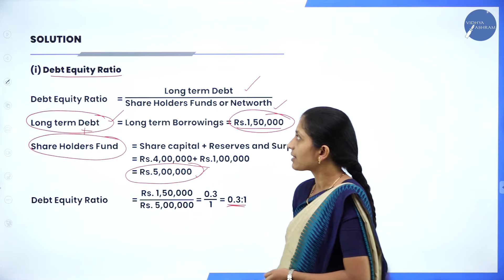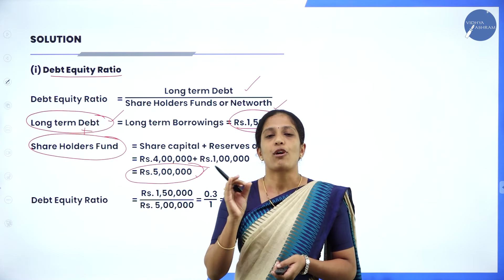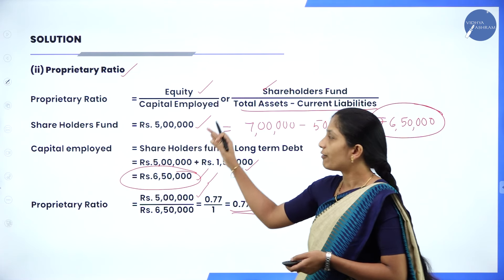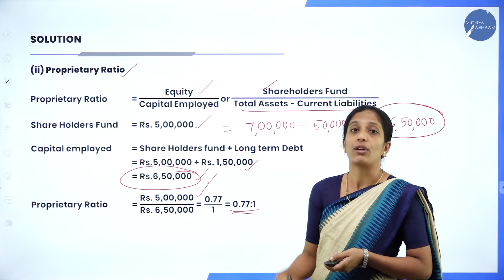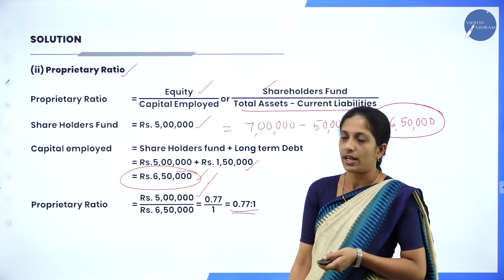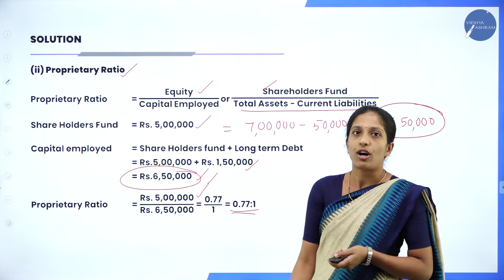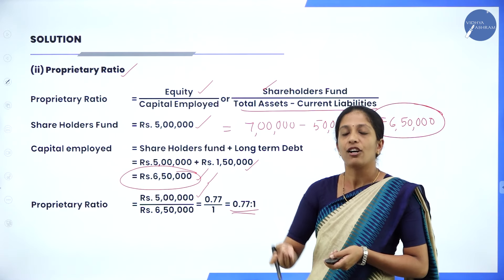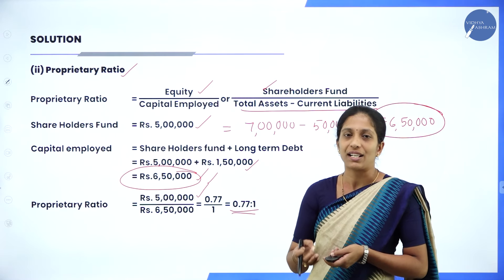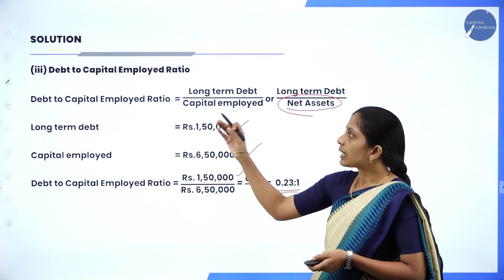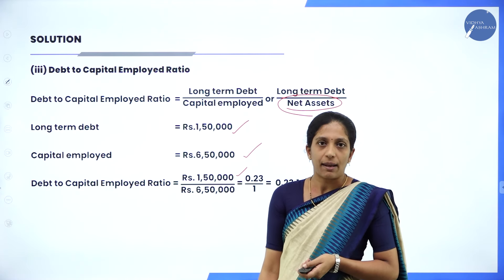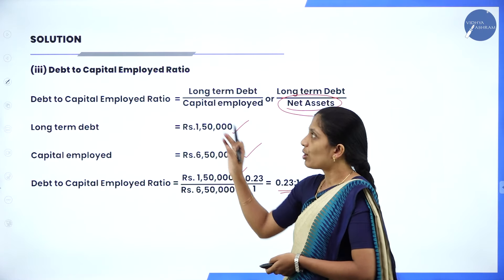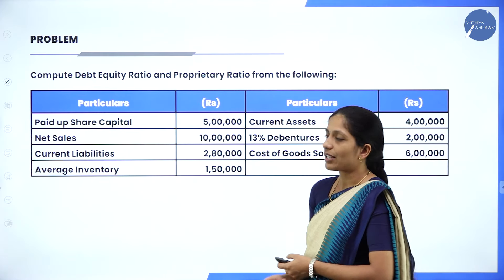To summarize the ratios discussed: Debt equity ratio formula is long term debt divided by shareholders fund. Proprietary ratio formula is shareholders fund or equity divided by capital employed, where capital employed = shareholders fund + long term debt, or total assets minus current liabilities. Debt to capital employed ratio is long term debt divided by capital employed.